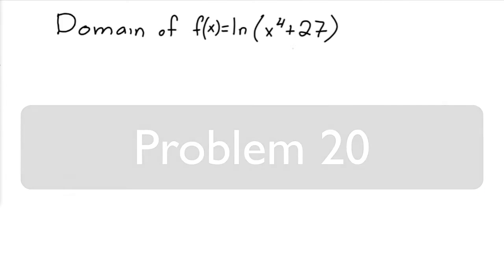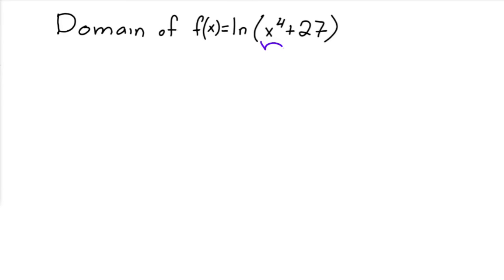If we're trying to find the domain of this function, we know that since this is the natural log, this guy right here has to be greater than 0. So when is x to the 4th plus 27 greater than 0? Well, the answer to that is, it's always greater than 0, because x to the 4th can't be negative. Add 27, it's always going to be positive. So the domain is from negative infinity to positive infinity.